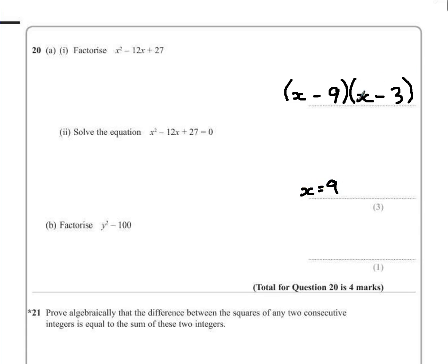Or we could have x equal to 3 because that would make that bracket 0 and therefore the whole equation equals 0. So there are two possible solutions.